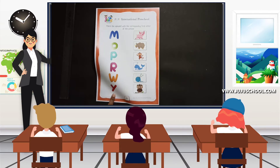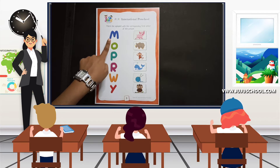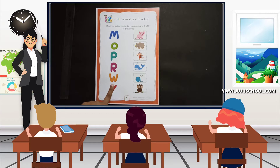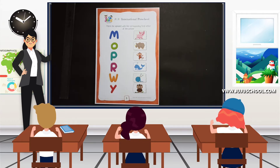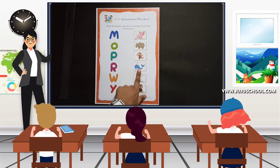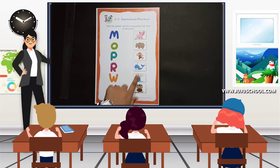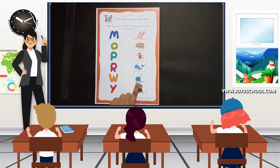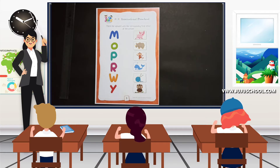Shall we read it again? M, O, P, R, W, Y. And let's read the pictures on the right side: rhinoceros, monkey, whale, yarn, owl. Let's make one more try: rhinoceros, monkey, whale, yarn, owl. Now we are going to match the alphabet with the corresponding first letter of the picture.